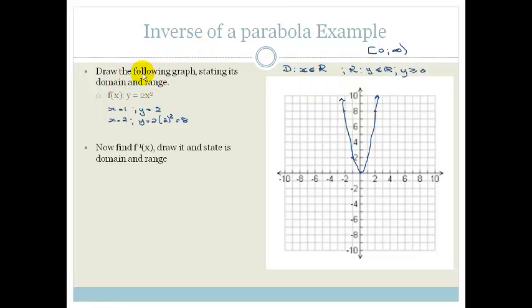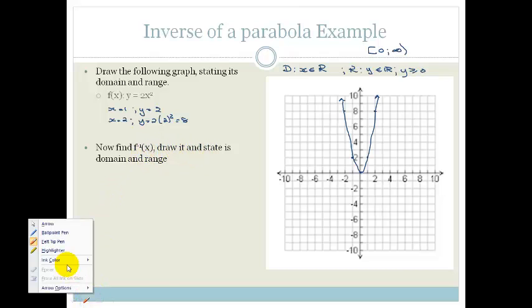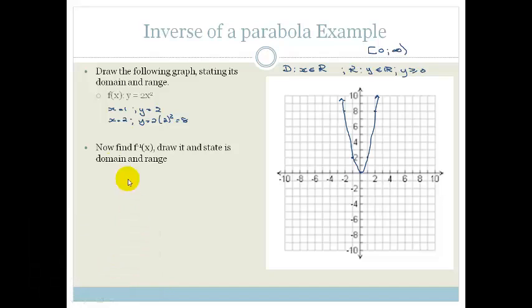Right. Now it says, find f^(-1)(x) and draw its domain and range. Okay, remember what we do when we're finding the inverse. What do we do? We swap the x and y, swap the x and y, and we solve, and I don't know why my pen's doing mad things. That's better. Solve for y.